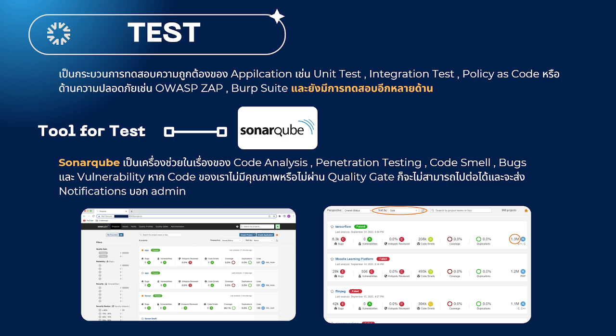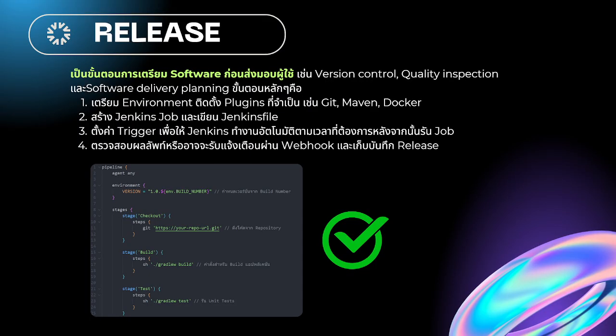SonarQube handles code analysis. Jenkins has a developer-focused code analysis pipeline that you can use for your project.